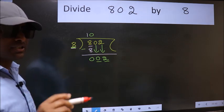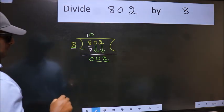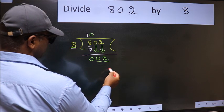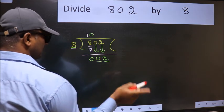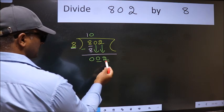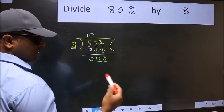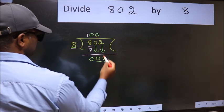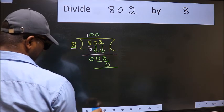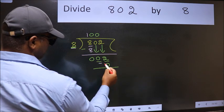Instead, what we should think is which number should we take here? If I take 1, we will get 8, but 8 is larger than 2. So we take 0. 8 into 0 is 0. Now we subtract.